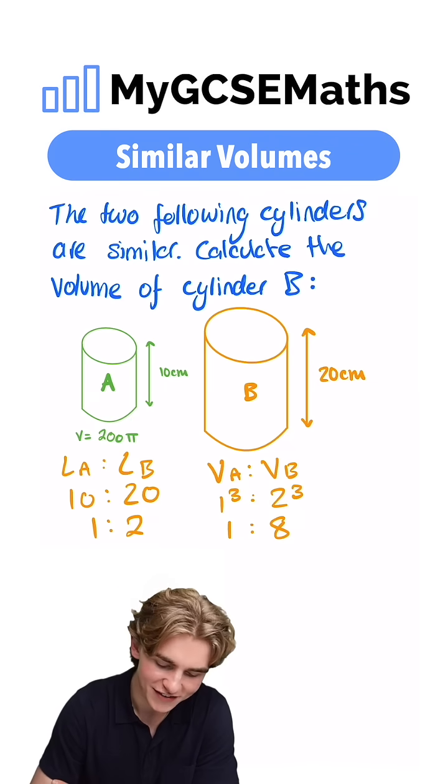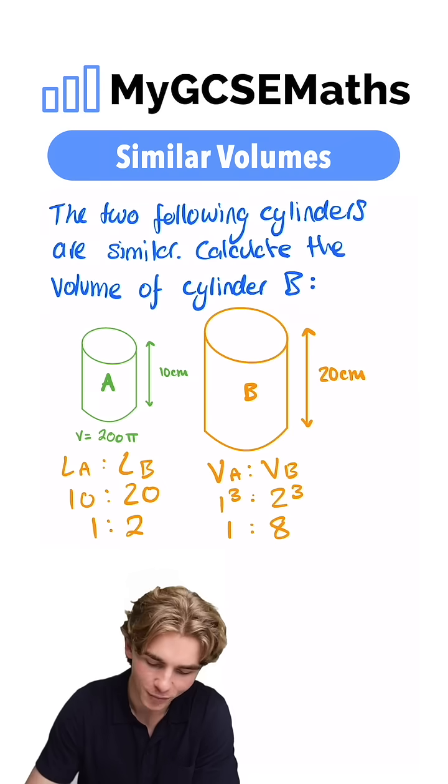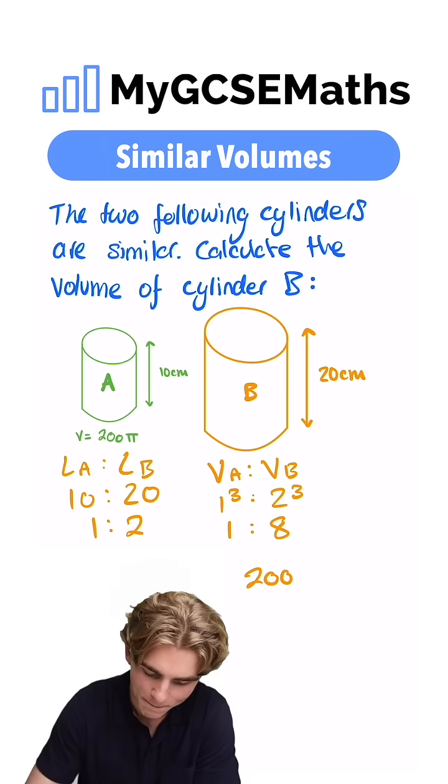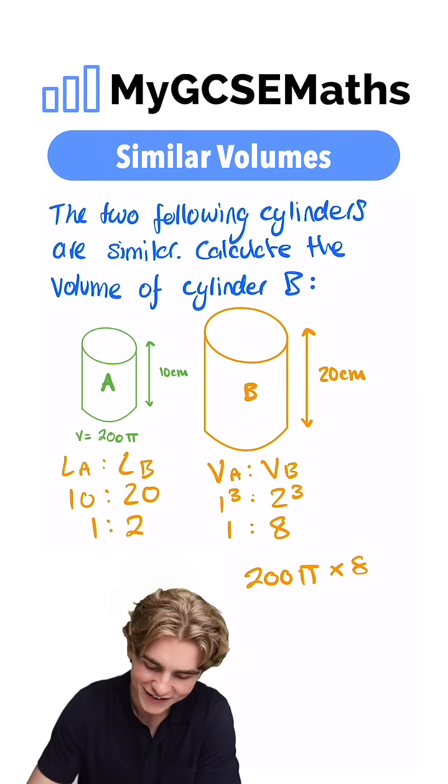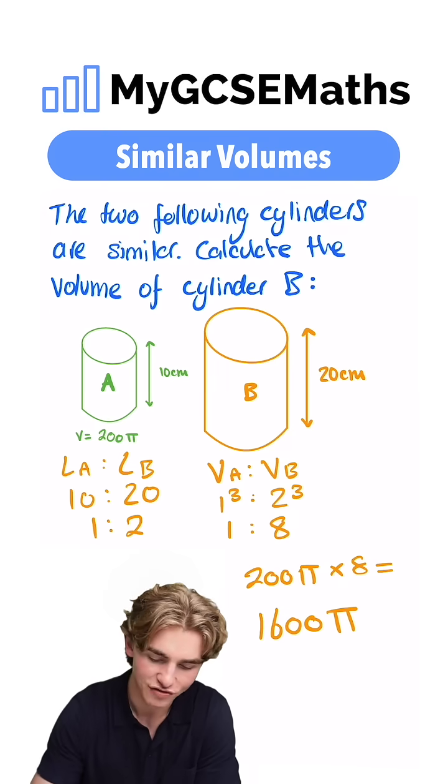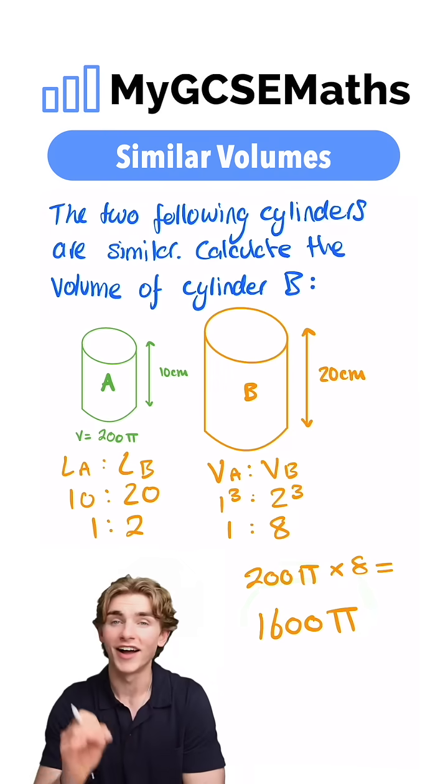We know the volume of A is 200π. So to find the volume of B, we can do 200π multiplied by 8. That guys is going to give us our answer. 200 by 8 is 1,600. So we have 1,600π. That is going to be our answer.